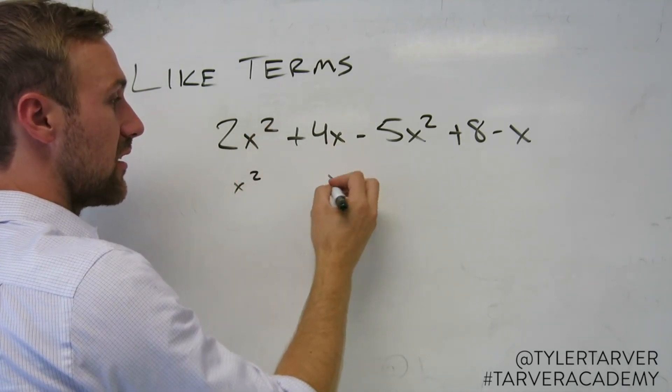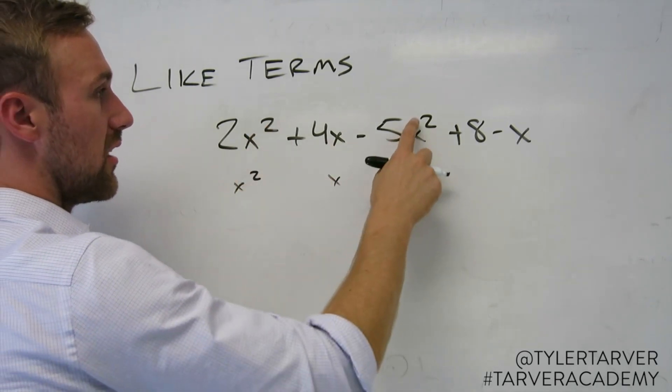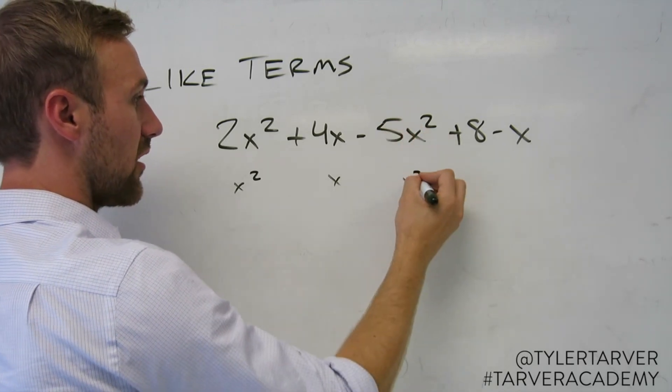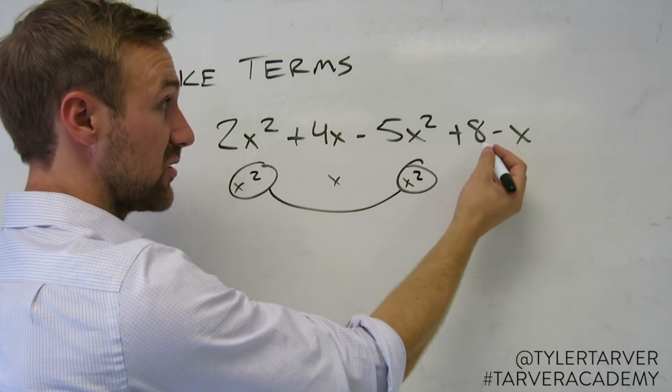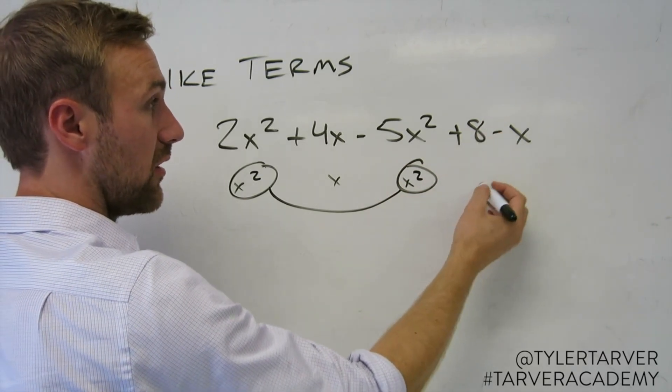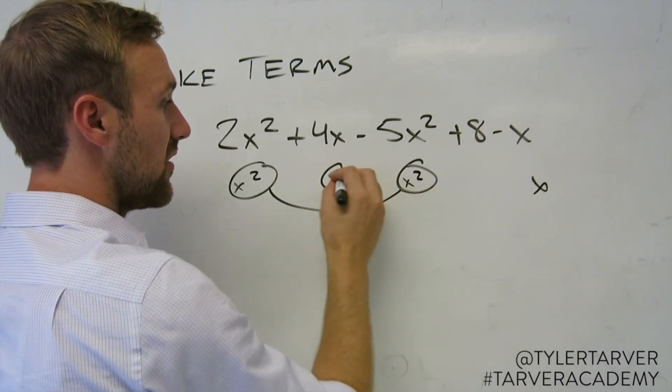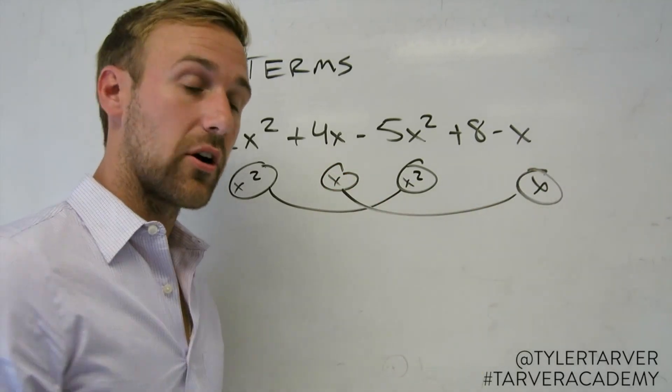That one only has an x. These are not like terms. This one has an x squared. These two are like terms. This one doesn't have an x or that. So it would just be a regular number. And then this has an x. These are like terms. And those are what like terms are.